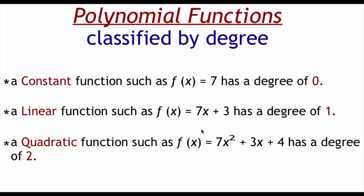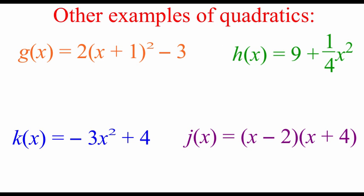If we look at a linear function like 7x plus 3, there is an x and the power on that x is just a 1, so we would say that it has a degree of 1. These quadratics we're going to be dealing with — if we build the function up to look like 7x squared plus 3x plus 4 — the highest power on the x is squared, so we would say that this has a degree of 2.